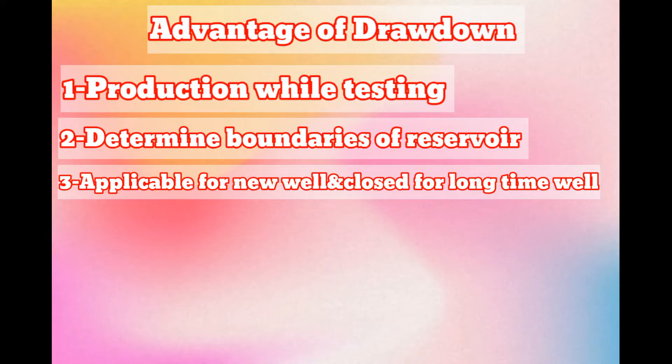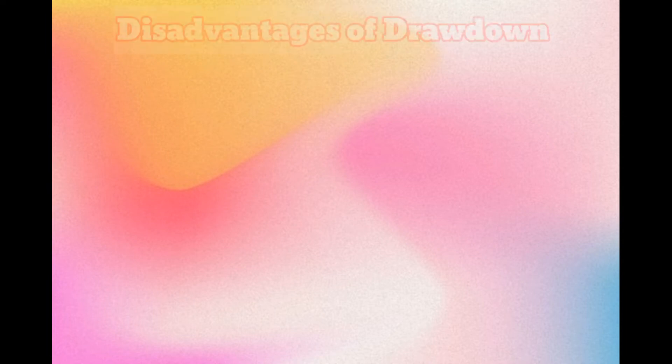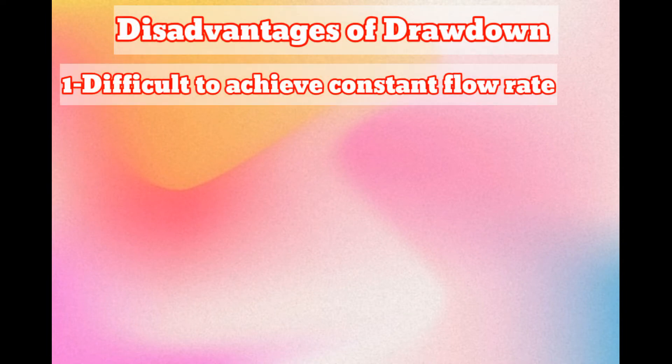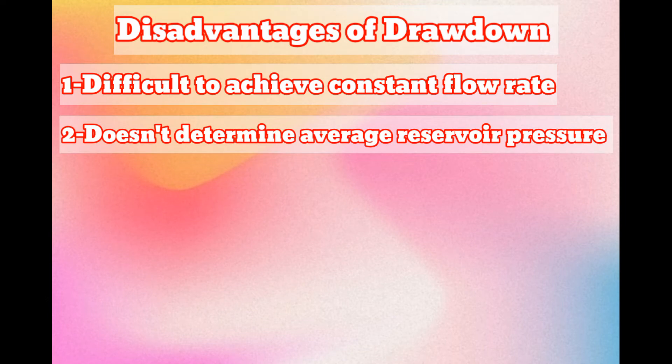After the advantages of drawdown test, now we discuss the disadvantages. One, it is difficult to achieve well flow at constant rate. Two, it does not determine the average reservoir pressure.